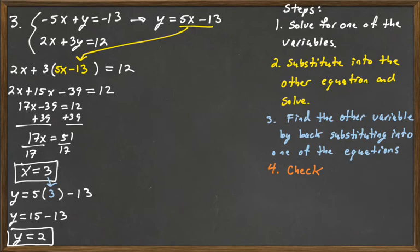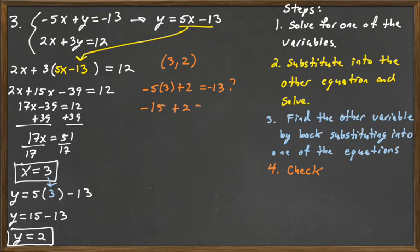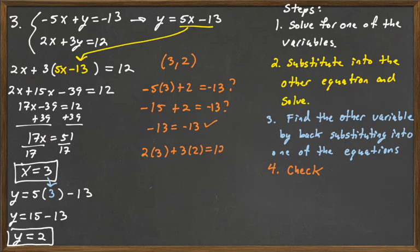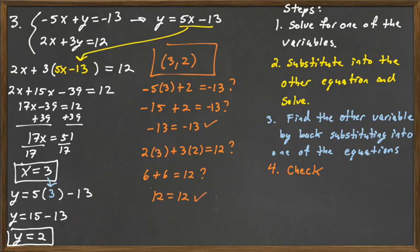We've got our solution — the last thing is to check that this works in both equations. Checking 3 comma 2: negative 5 times 3 plus 2, substituting into the first equation. Negative 15 plus 2 — is that equal to negative 13? Sure is. Negative 13 equals negative 13. Now check the second equation, 2x plus 3y equals 12: does 2 times 3 plus 3 times 2 equal 12? Is 6 plus 6 equal to 12? Yes — 12 equals 12. So we do have a solution: one solution, and this is an independent system.